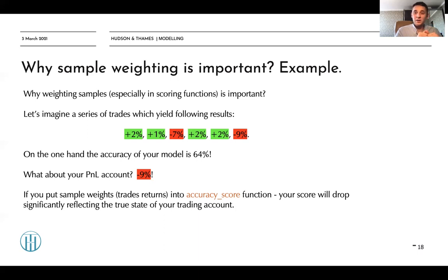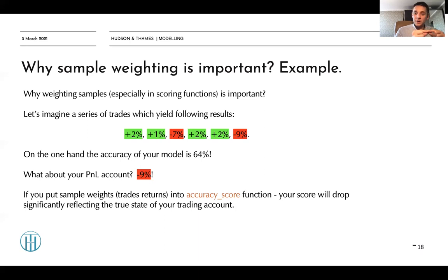That's why you need to account for not only accuracy in terms of how many trends you predicted correctly, but also the impact of each trade on your PNL. If you manage to predict many small trends but misclassify big trends, you will end up in a bankrupt case. If you put sample weights into your accuracy score, your score will drop significantly, which actually reflects the true state of your trading account.